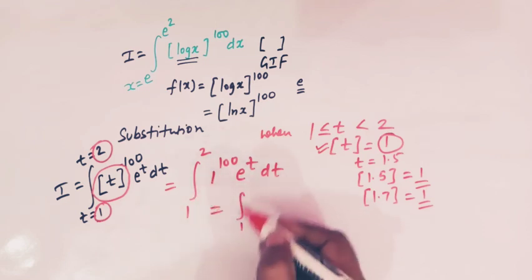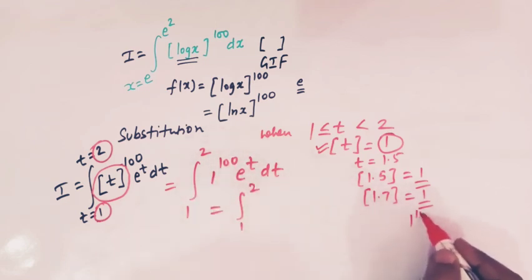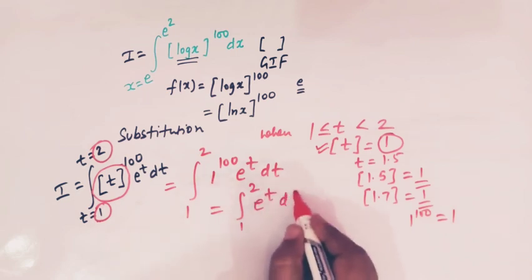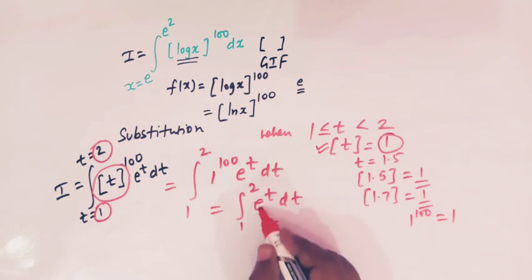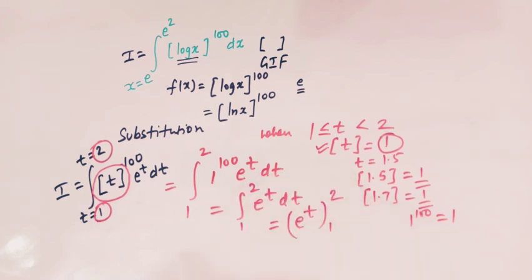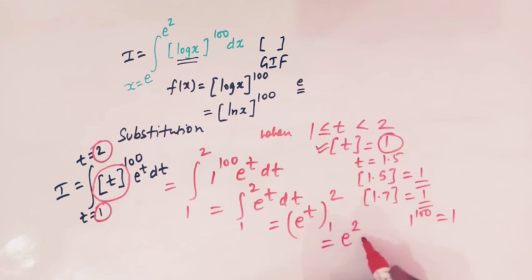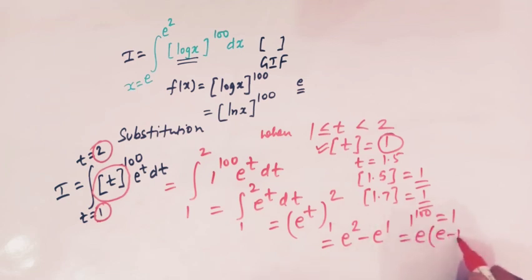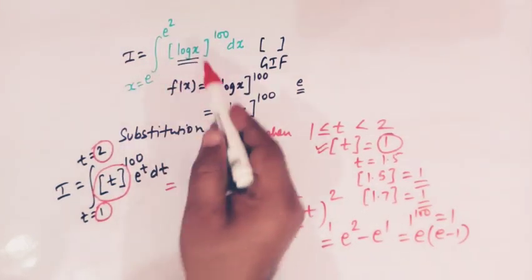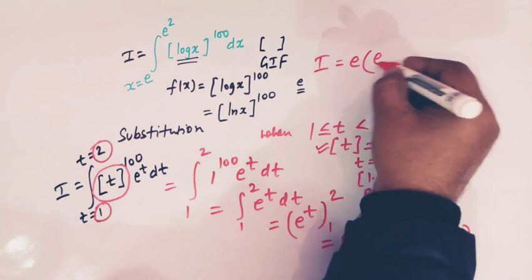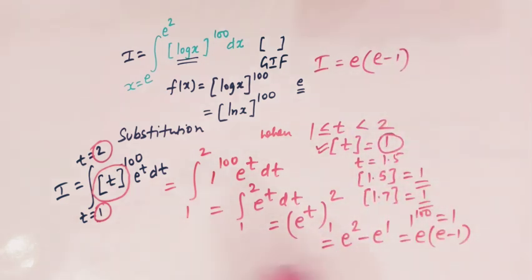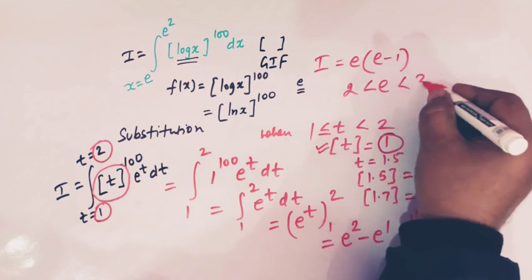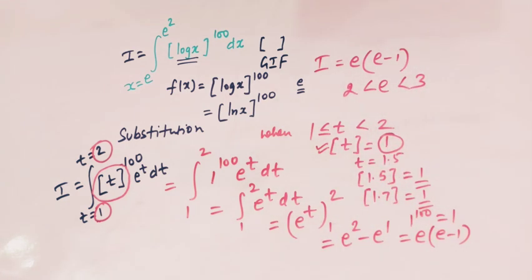This is the integral from 1 to 2. Since 1 raised to 100 is equal to 1, we are left with the integral of e raised to t dt. The integral of e raised to t is e raised to t, evaluated from 1 to 2. Substituting the limits and taking the difference, we have e raised to 2 minus e raised to 1, which can also be written as e times (e minus 1). So the value of this integral I is equal to e times (e minus 1), where e is the famous irrational exponential number which lies between 2 and 3.